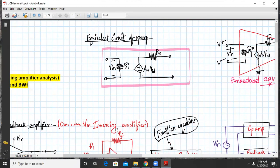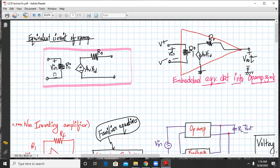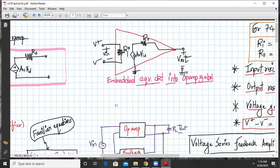So let us start with the equivalent circuit of the op-amp. This is my equivalent circuit having input and output ports. Here is my input impedance, my output impedance, and my voltage dependent source. This equivalent circuit is embedded inside the symbol.